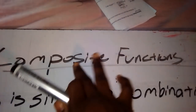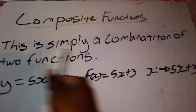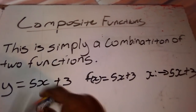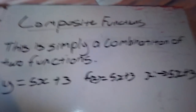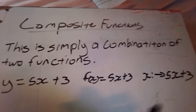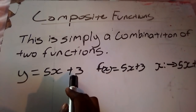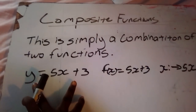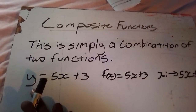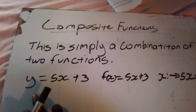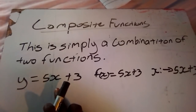All right, so the new topic is composite functions. A composite function is simply a combination of two functions — you take two functions and combine them together. For example, y equal to f of x plus 3 — this by itself is what we call a function, where y equals something including x.